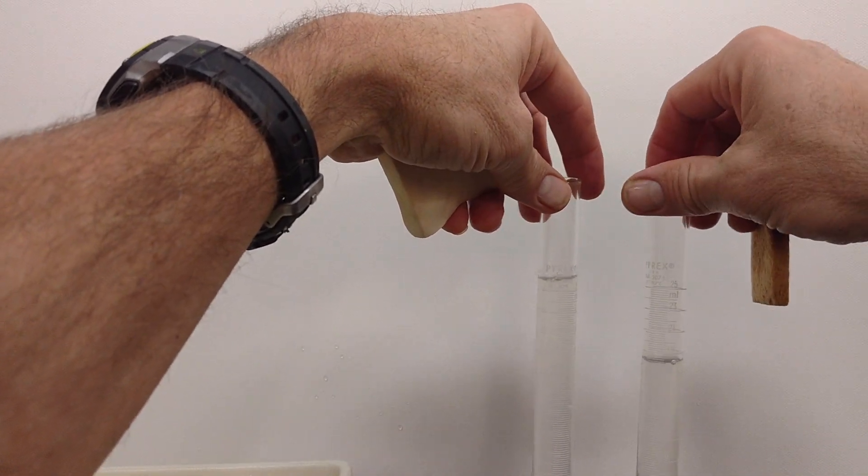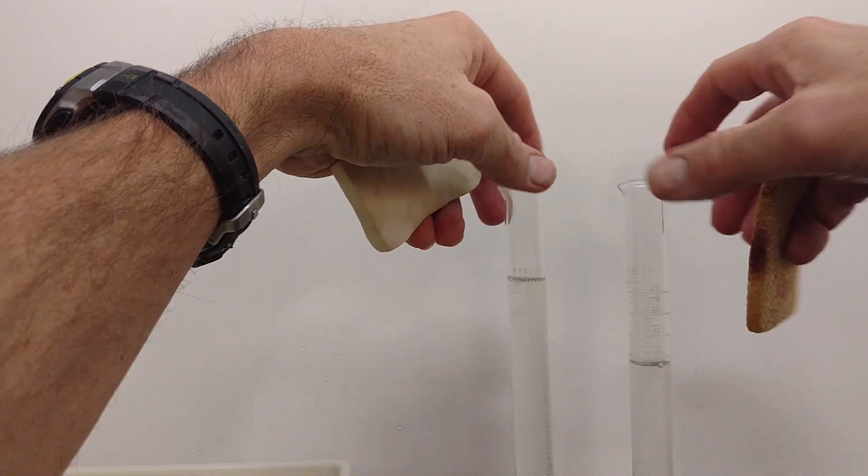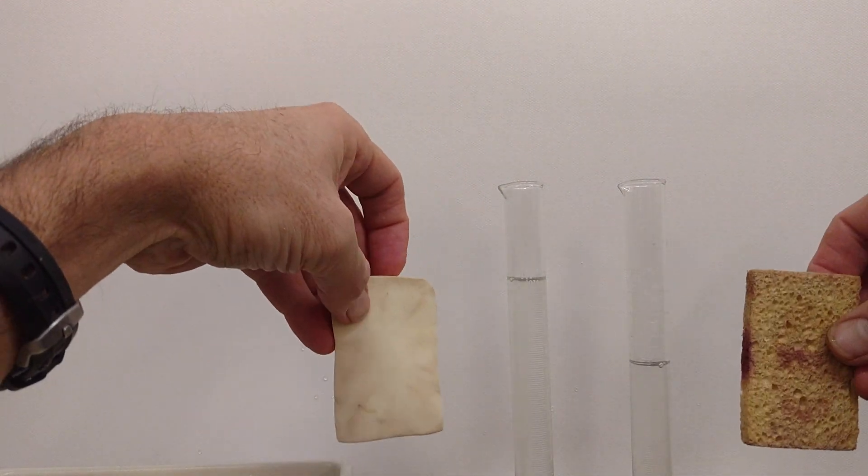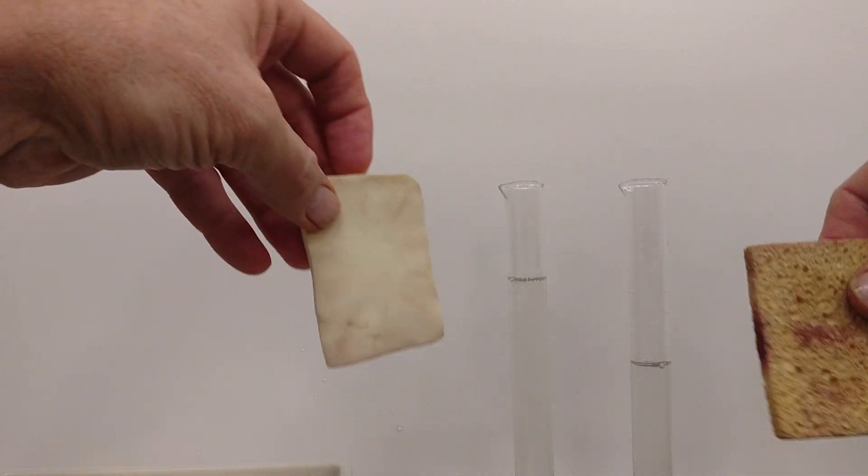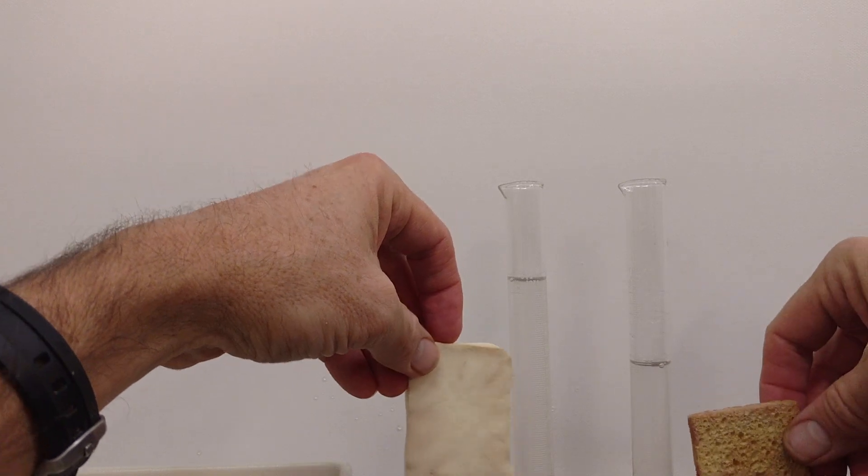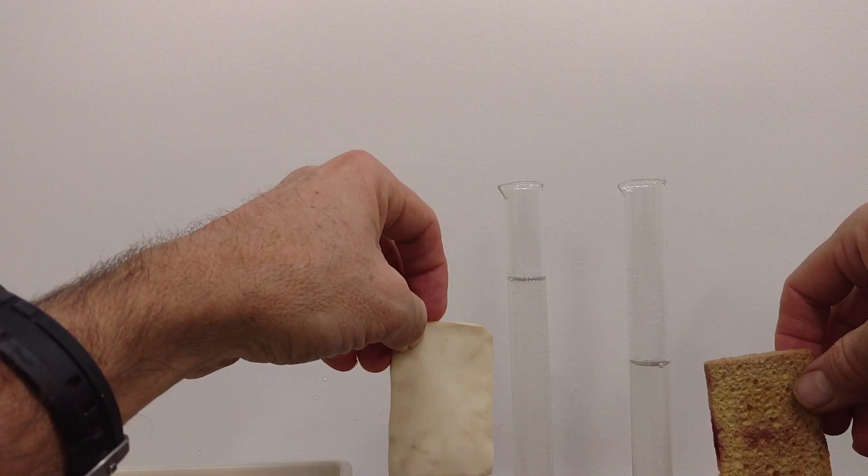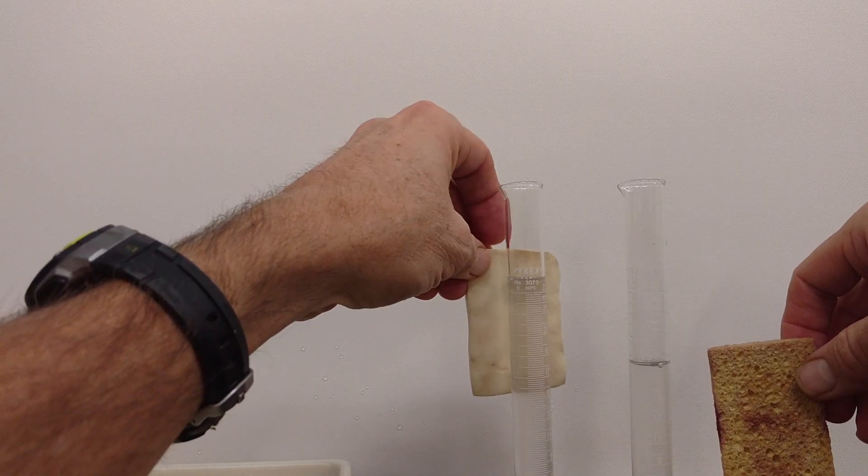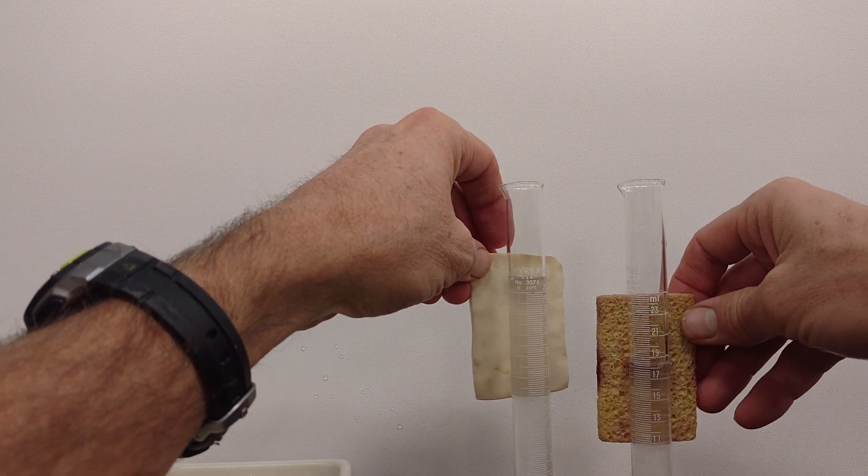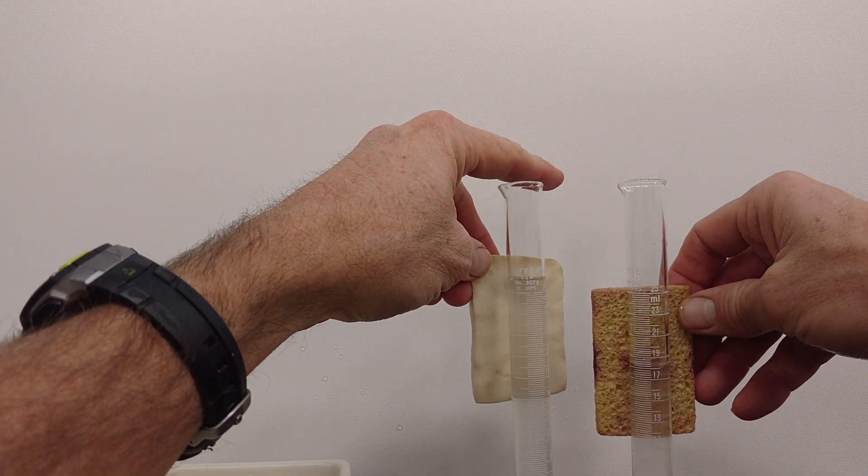If we compare now which of the sponges held more water against the pull of gravity—the one with the large pores, or the one with the small pores—we can see that the one with the small pores held considerably more water than the one with the large pores.